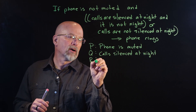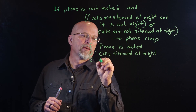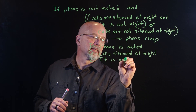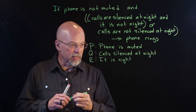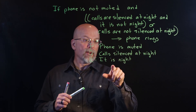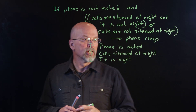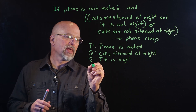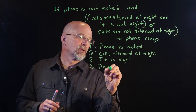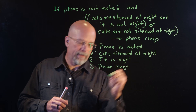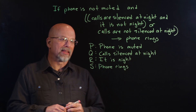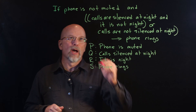So we have P, Q, and R. R is: it is night. I'm making these in the positive, so it is not night would be the negation of R. And then we have S: phone rings. Now, what does this look like if I were to make this into a compound sentence?